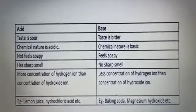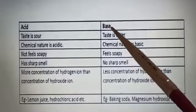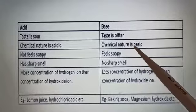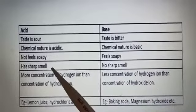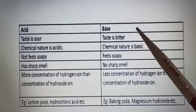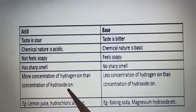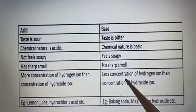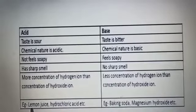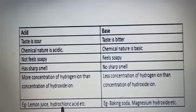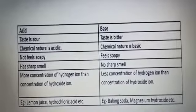Some differences of acids and bases you can see. Acids have sour taste, bases have bitter taste. Acids are acidic in nature, bases are basic in nature. Acids don't have soapy touch, bases have soapy touch. Acids have sharp smell, bases do not have sharp smell. Acids have more concentration of hydrogen ion than concentration of hydroxide ion. Bases have less concentration of hydrogen ion than the concentration of hydroxide ion. This we will discuss later in detail. Examples are lemon juice, hydrochloric acid for acids, and baking soda, magnesium hydroxide for bases.